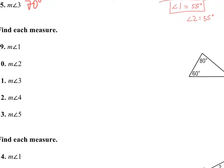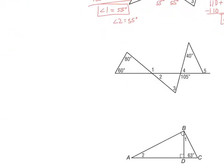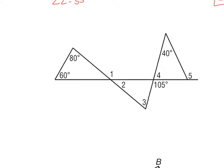The next one is a little bit trickier. I notice I've got two interior angles of 60 degrees and 80 degrees, and angle 1 is the exterior angle. Using the Exterior Angle Theorem, I know angle 1 equals the sum of the two interior angles, so 60 plus 80 equals 140. Angle 1 is equal to 140 degrees.